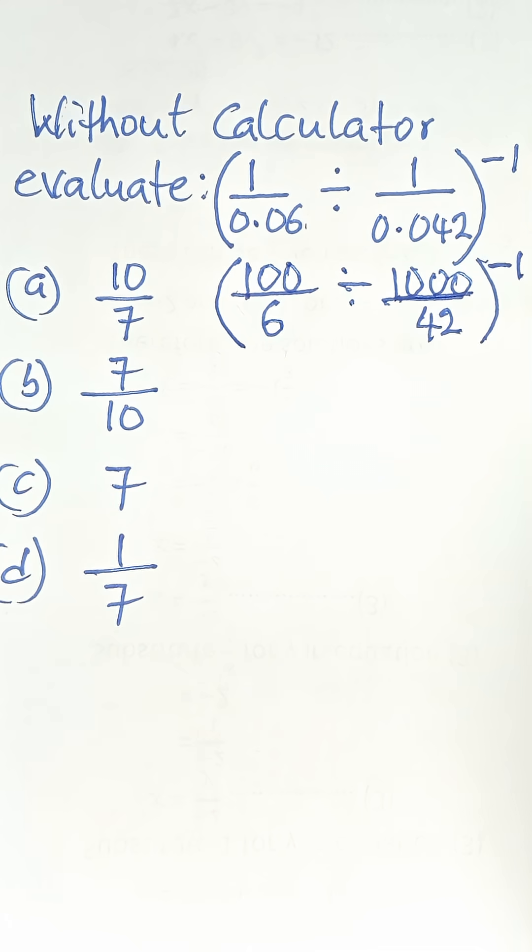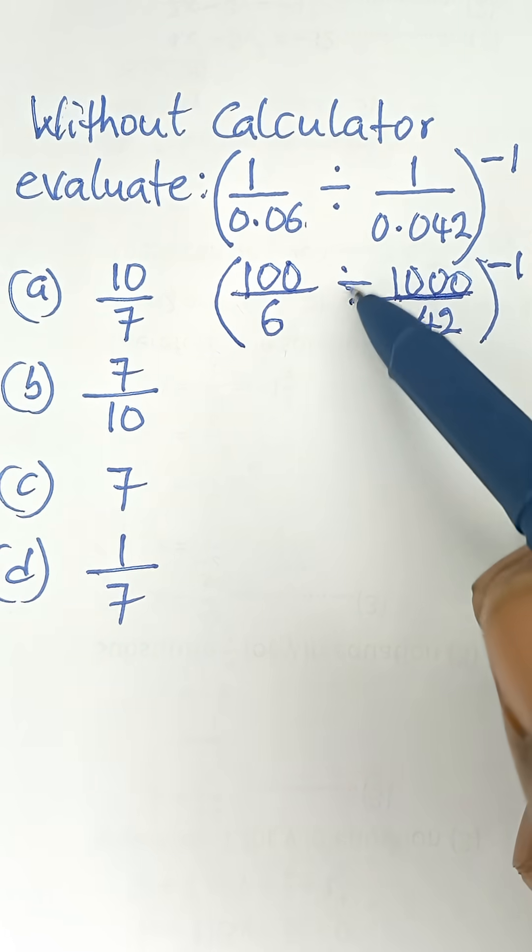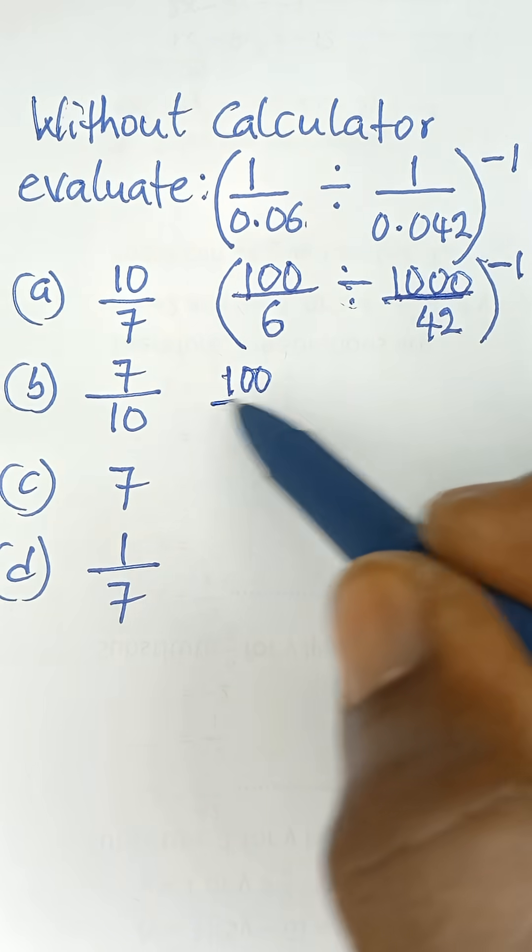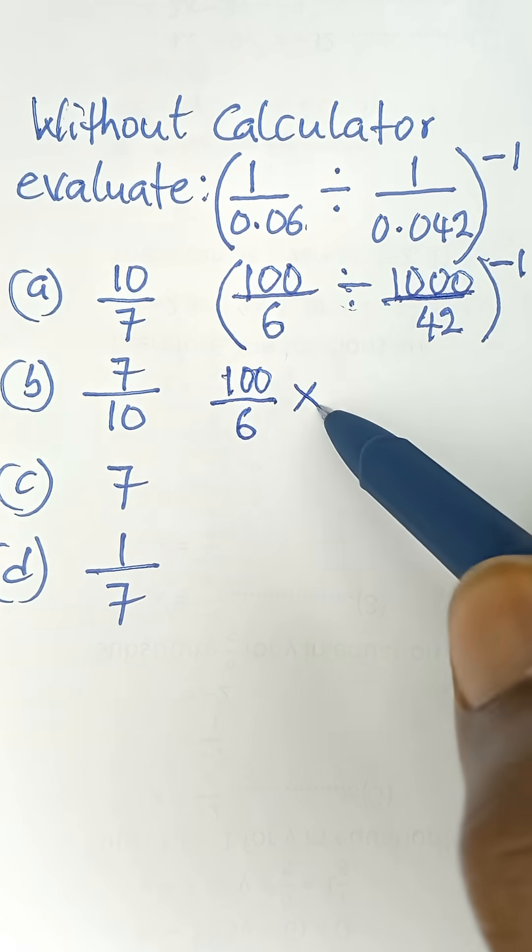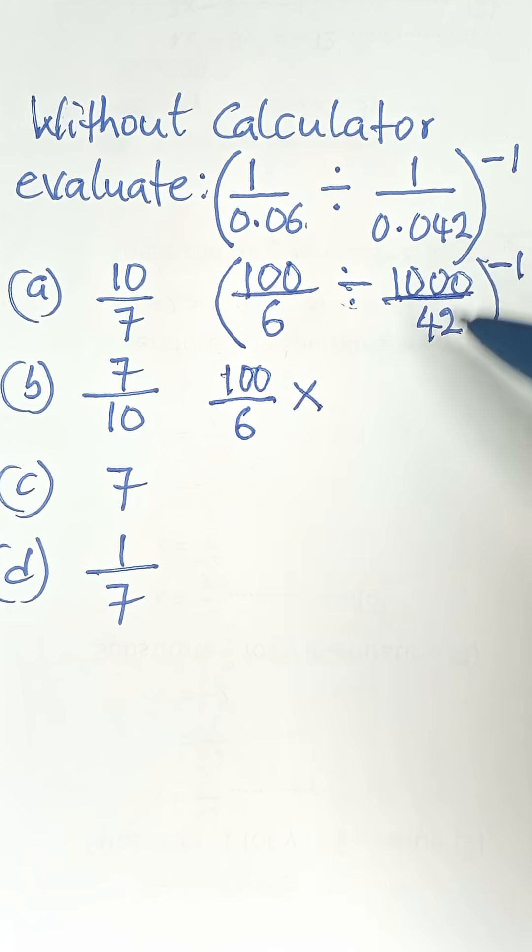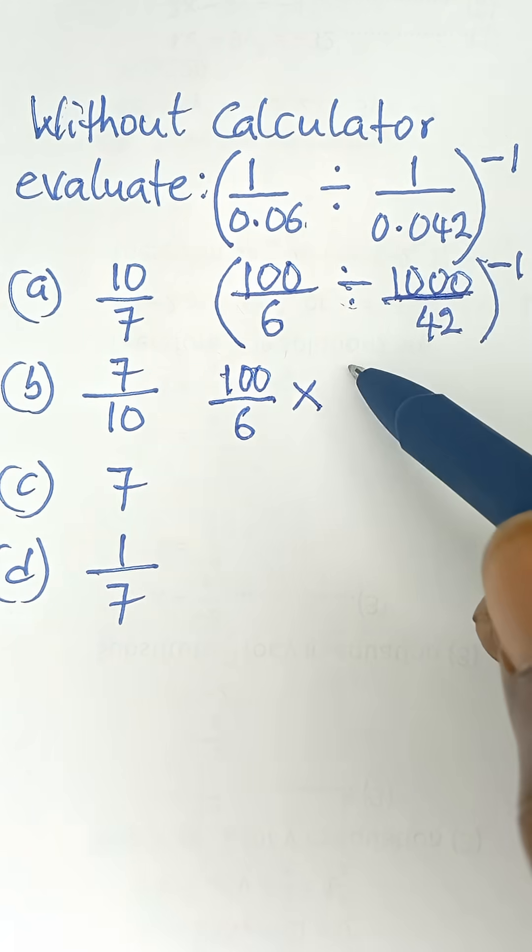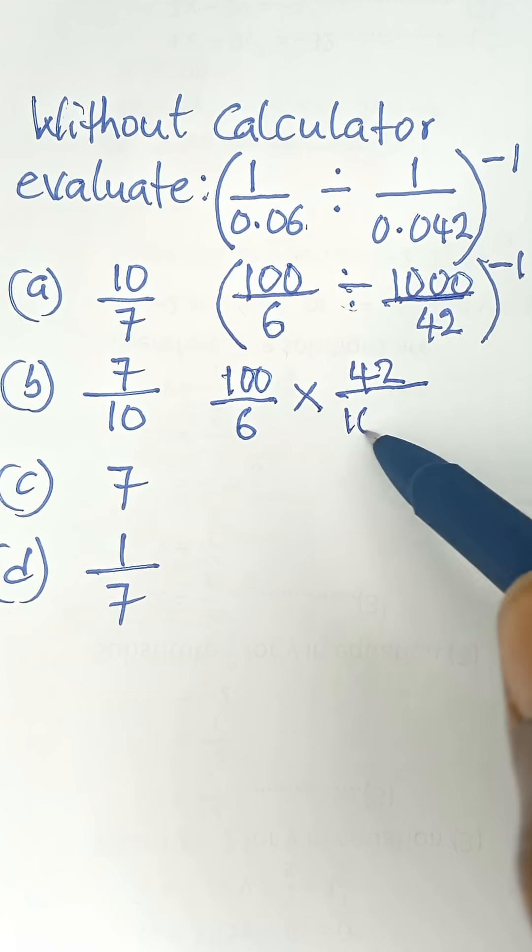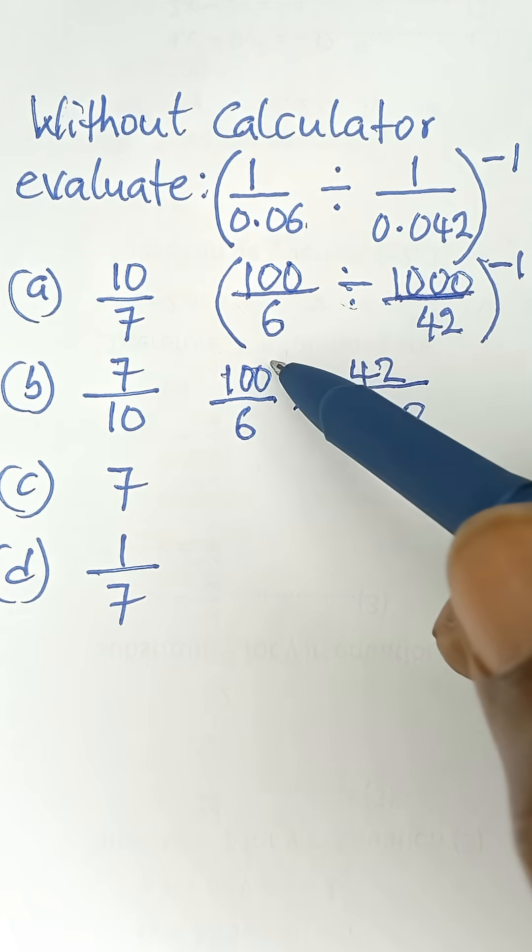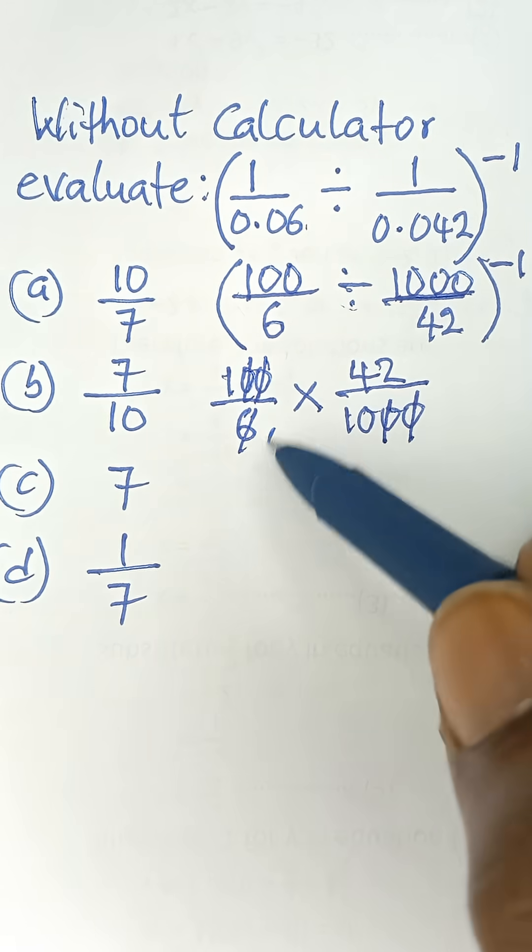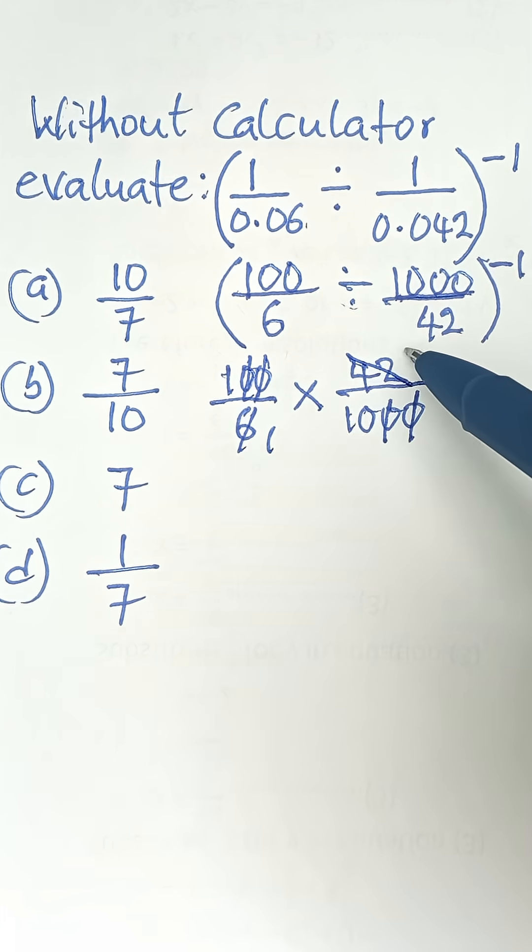Now the next thing for us to do is to change this to multiplication, because this is fractional division. So it becomes 100 over 6, then multiply by - when we change this division to multiplication sign, as usual in fraction, we invert the right hand side. So 42 goes up, and then 1,000 comes down. So we cancel zeros and simplify: 6 in 42 is 7.